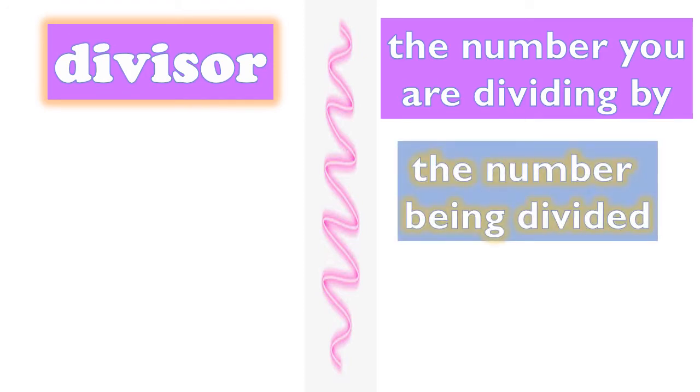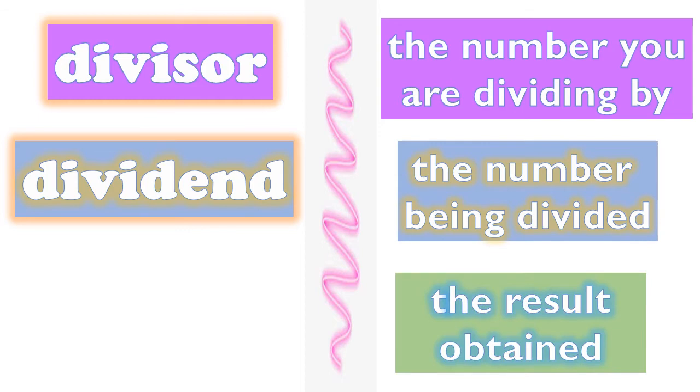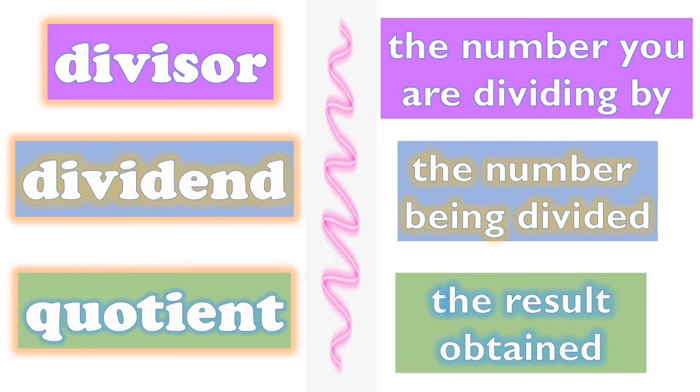What is the number being divided? Good job, it is the dividend. And the result obtained is the quotient.